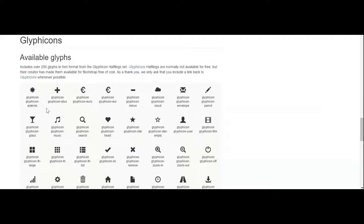So if you want to include an asterisk symbol in your code, you can use Glyphicon asterisk. If you want a heart, you can say Glyphicon heart, and if you want music, you can say Glyphicon music. All these are available in Bootstrap and you can use them, and these are called Glyphicons in Bootstrap 3.